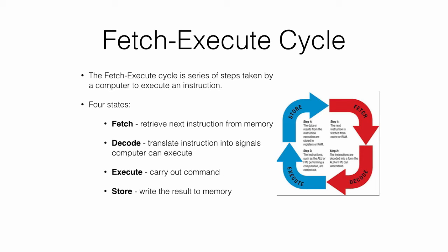The fetch-execute cycle, or machine cycle, is a series of four steps followed by a CPU whenever an instruction is executed. First, the CPU fetches the instructions from memory. The instruction is then decoded into signals that can be executed. The commands are carried out in the execute stage, and then finally they are stored if necessary.